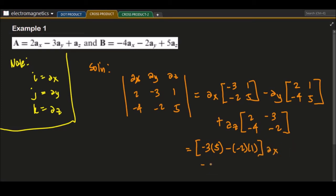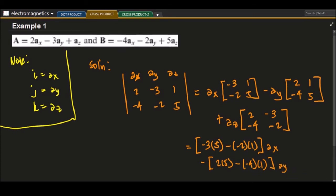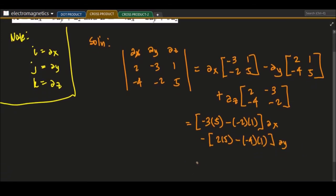Minus 2 times 5 minus negative 4 times 1, this will be a sub y. Plus 2 times negative 2 minus negative 4 times negative 3. This will be a sub z.